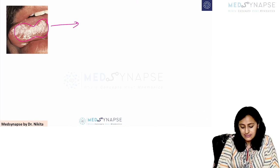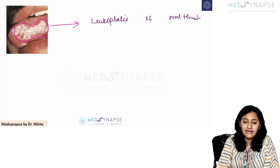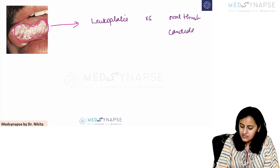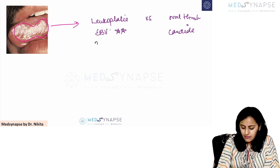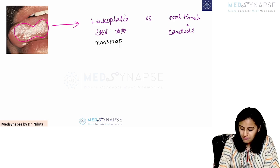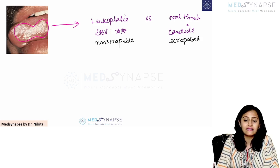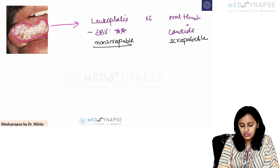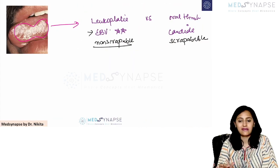When a white lesion is shown on the lateral border of the tongue, this is oral hairy leukoplakia. It looks similar to oral thrush caused by Candida, but remember: oral thrush (Candida) is scrapable, while oral hairy leukoplakia is non-scrapable and is EBV (Epstein-Barr virus) associated — an important recent exam question.